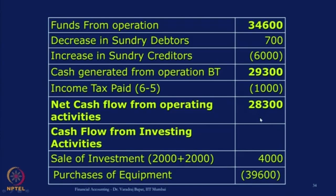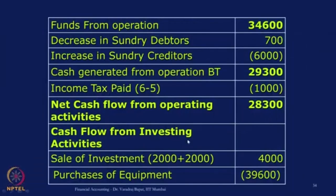That means that much cash we have got from our normal business activities. This was a bit complicated — the remaining is very simple. Next is cash flow from investing activities. Go to the balance sheet; we had marked many items as I. So just take those items — I means investing — and put them here.